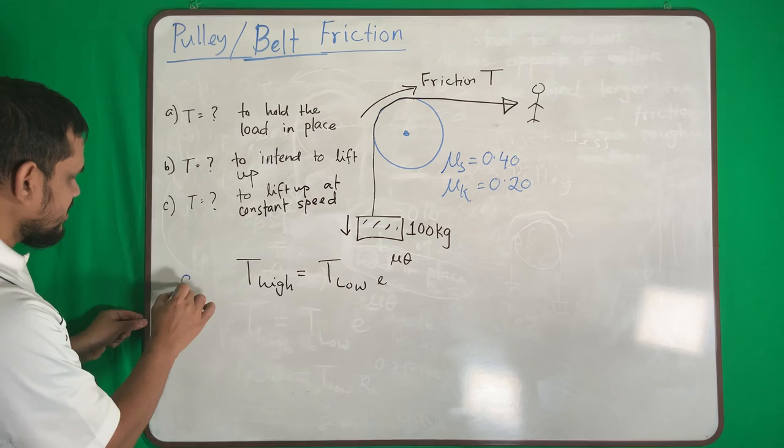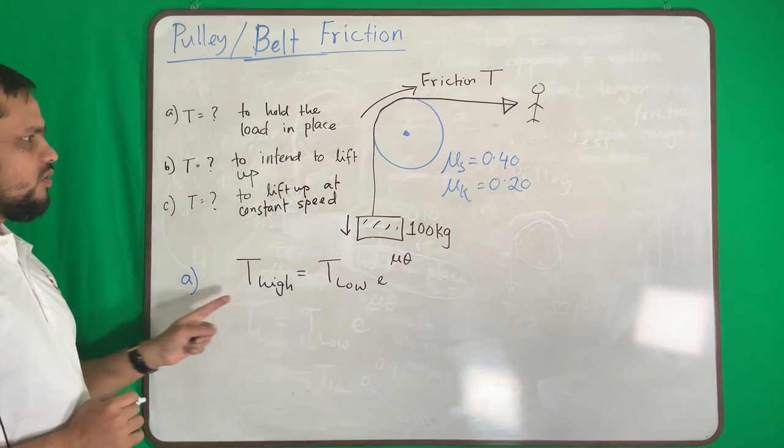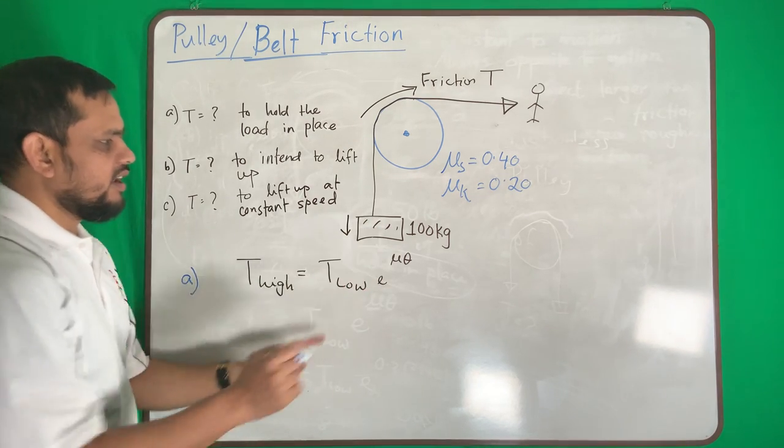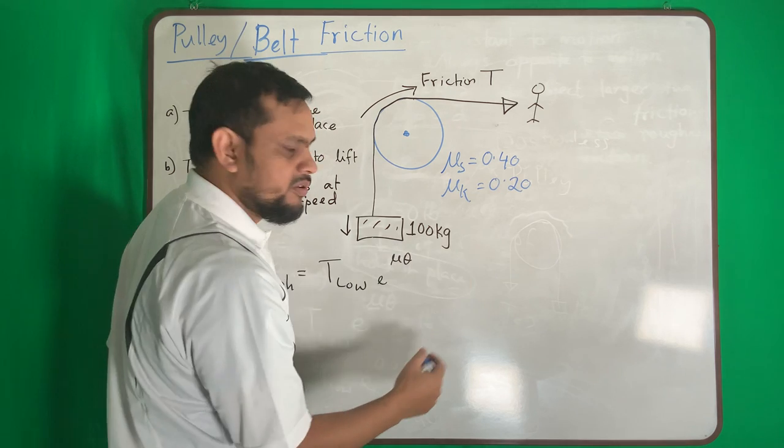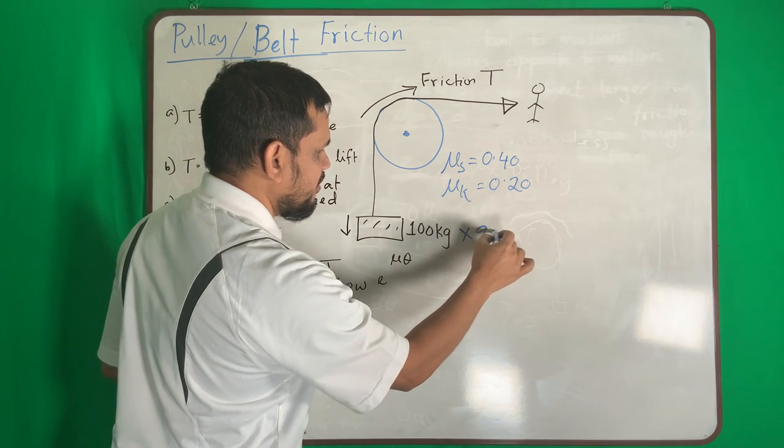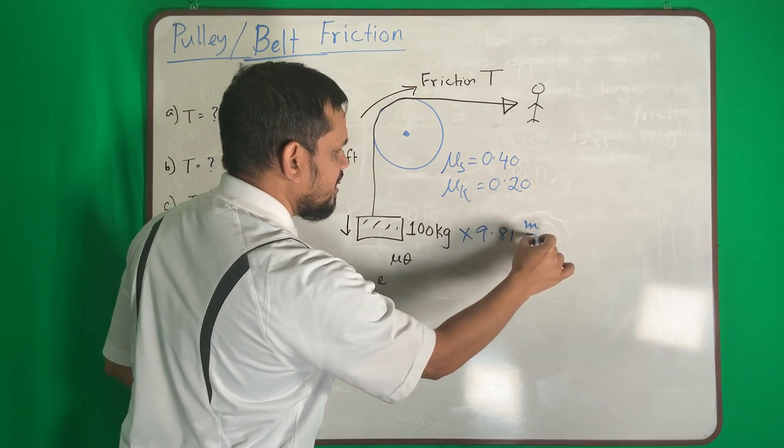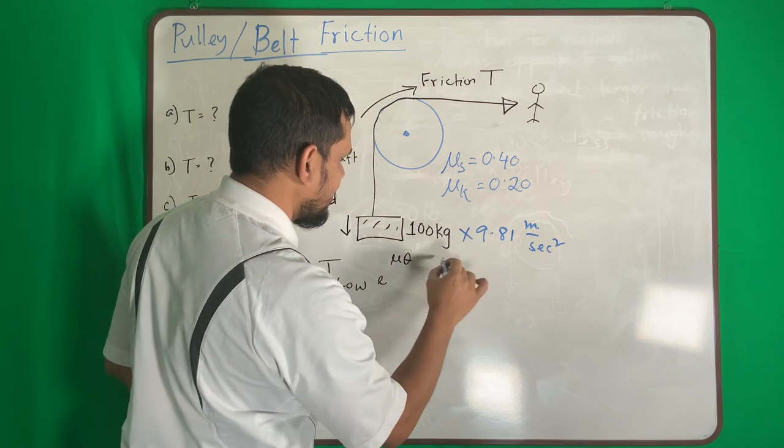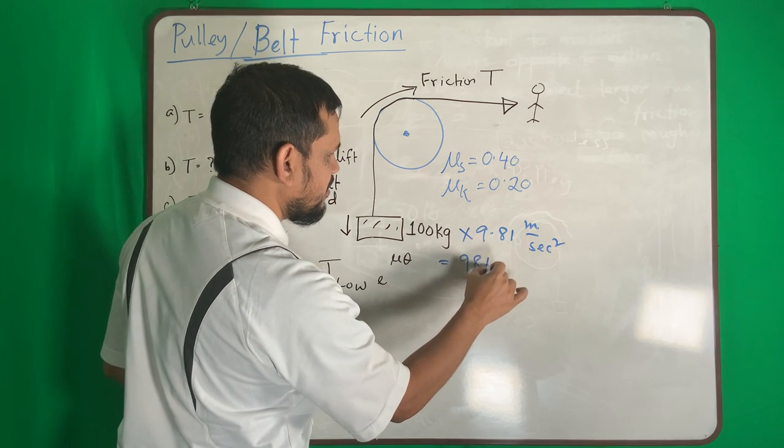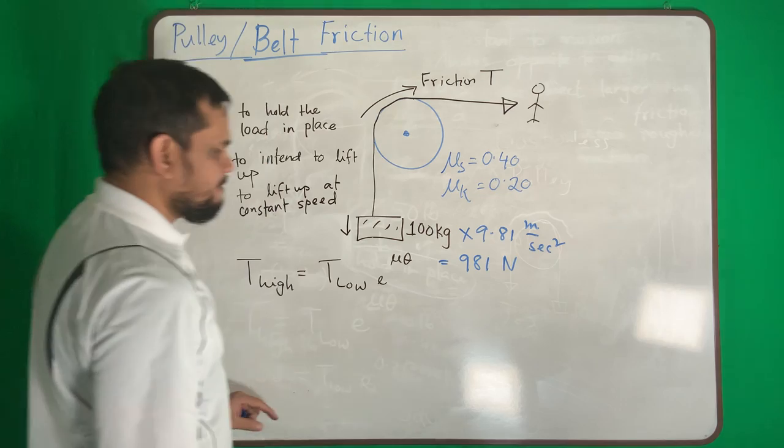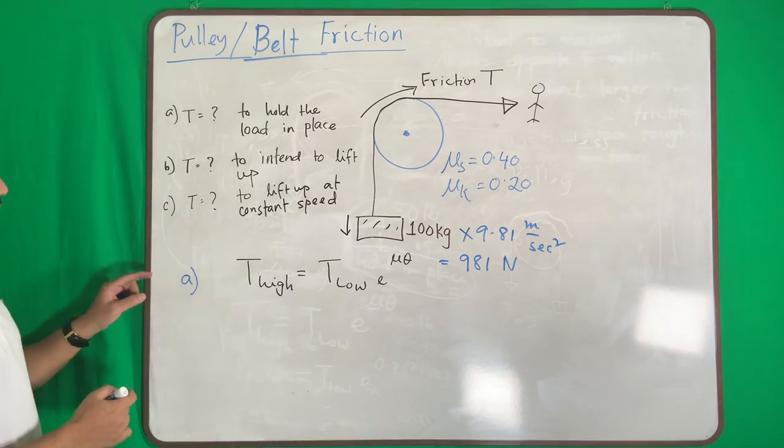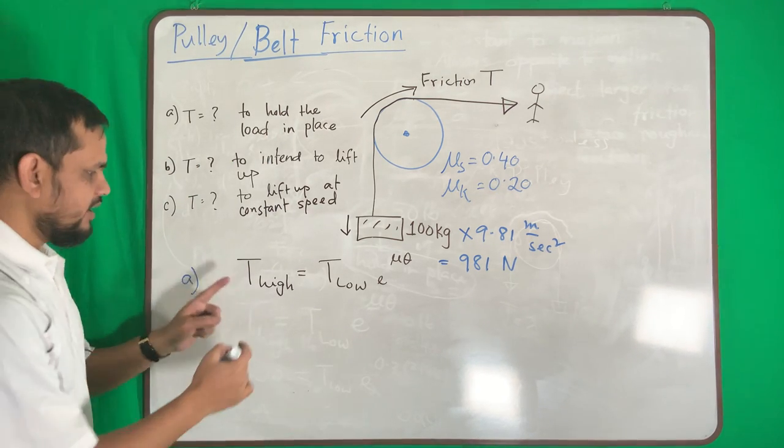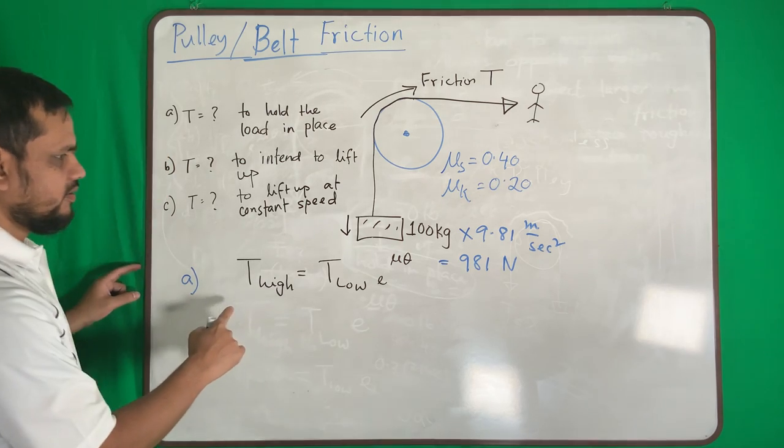Case number one: case number one will be higher. Now if I have to convert it into Newton, times 9.81 meter per second squared, which is 981 Newton. So case number one, who is higher? This value.